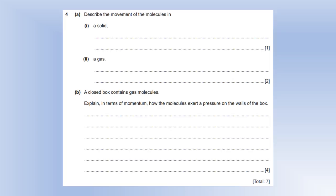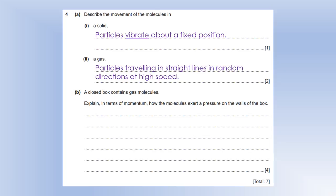Describe the movement of molecules in a solid. Well, molecules in a solid stay in a pretty much fixed position, but they are still moving. They're still vibrating. In a gas, they are free to move. But because they're free to move, they travel in straight lines. And they will move in completely random directions. And they'll do that at high speed.